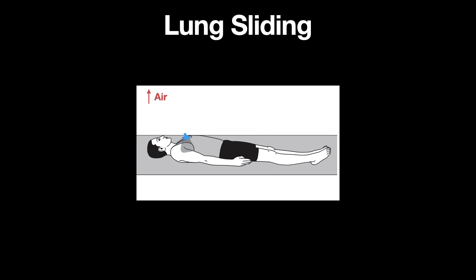To rule out a clinically significant pneumothorax, this exam is best performed with the patient completely flat, evaluating the most anterior aspect of the chest, usually the second intercostal space.